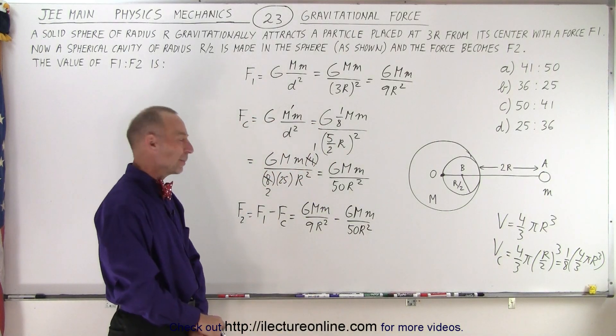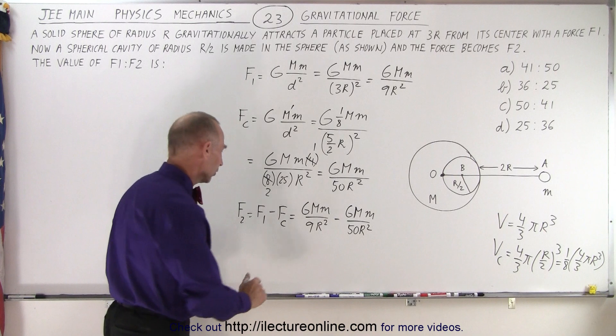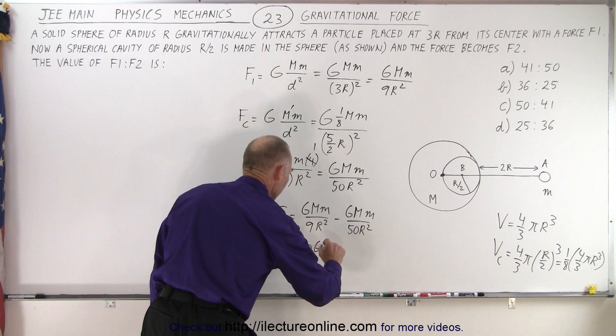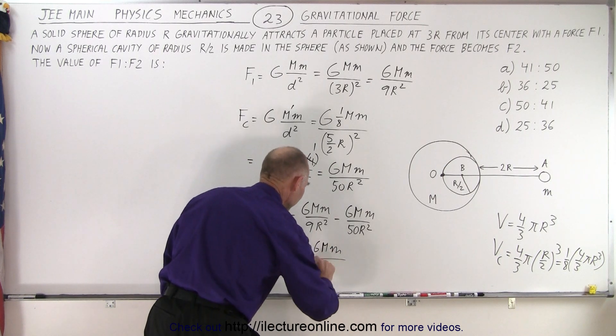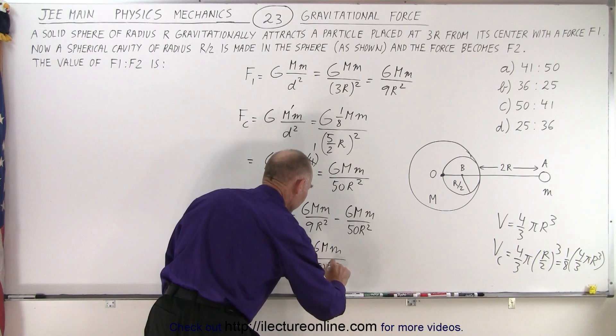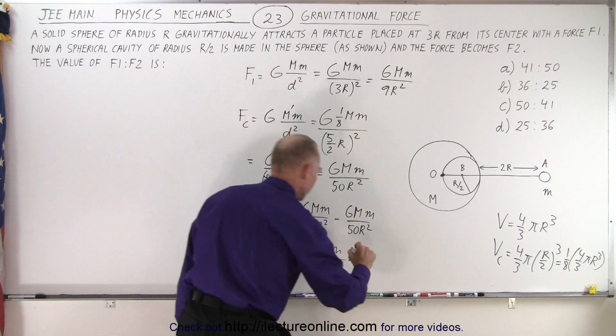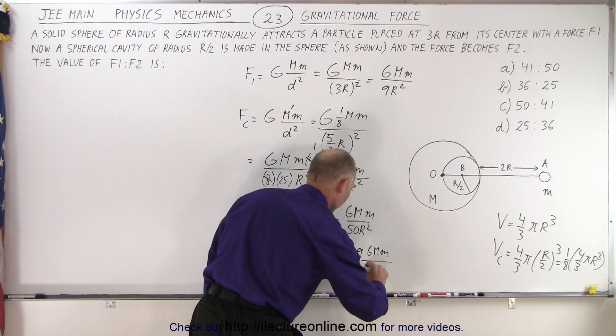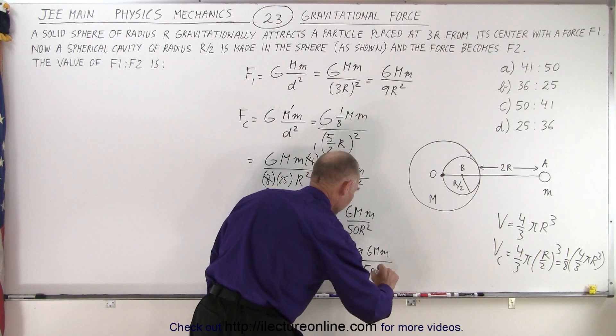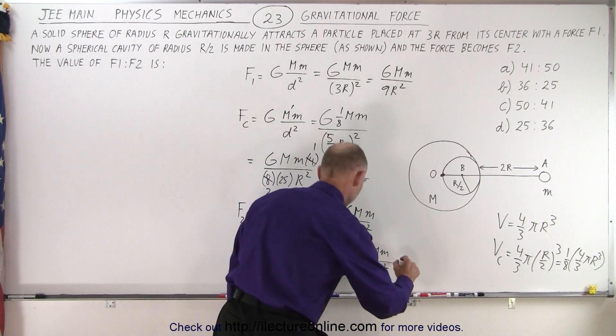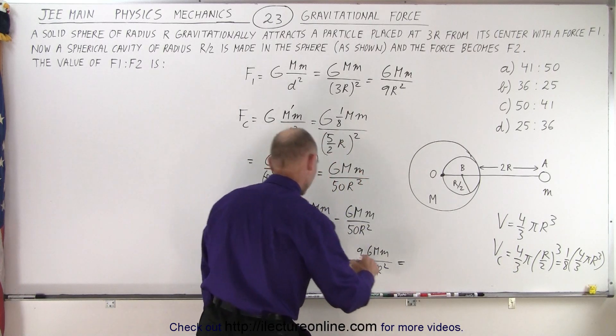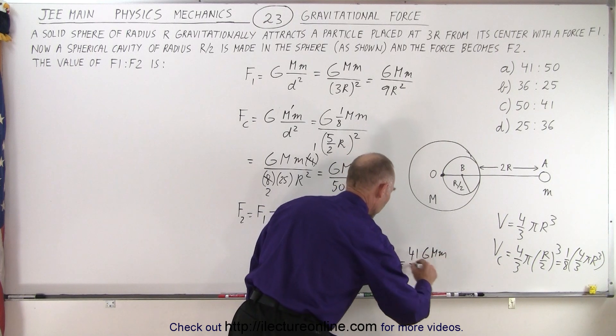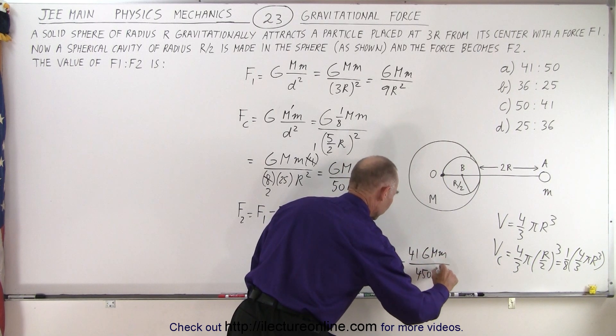Looks like the common denominator is the product between the two. So this becomes equal to 50GMm over 450r² minus that would be 9GMm over 450r². So this becomes equal to 50 minus 9 or 41GMm over 450r².